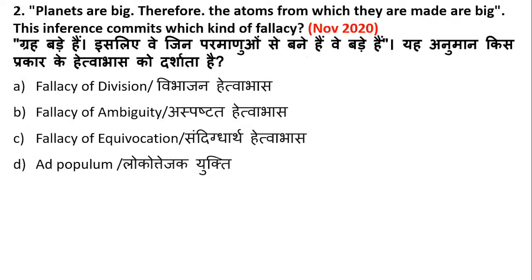The next question is: planets are big, therefore the atoms from which they are made are big. This inference commits which kind of fallacy? The options are fallacy of division, fallacy of ambiguity, fallacy of equivocation, or ad populum.